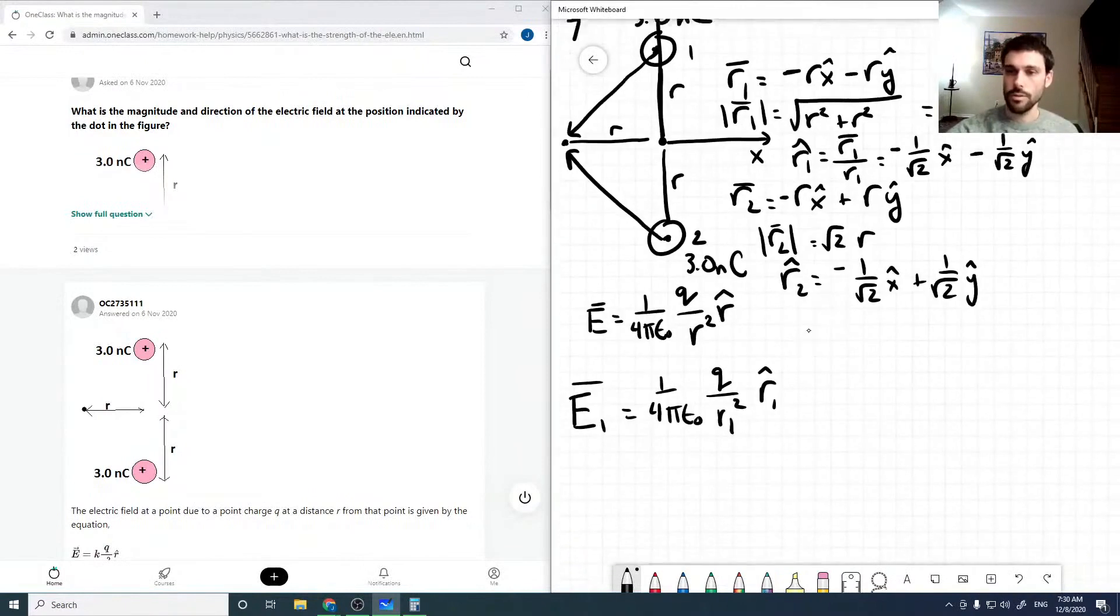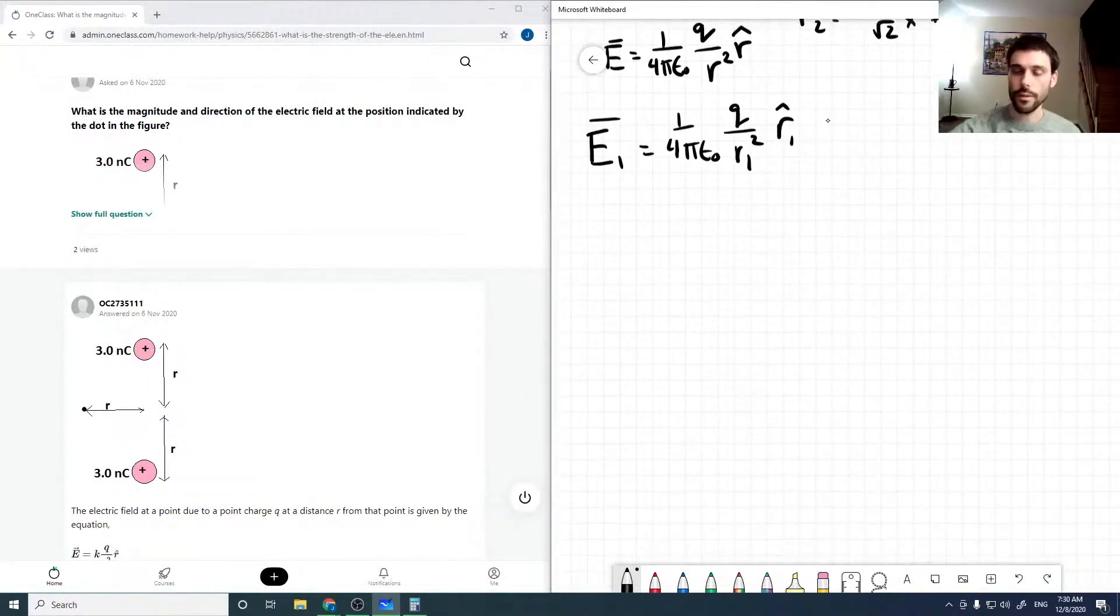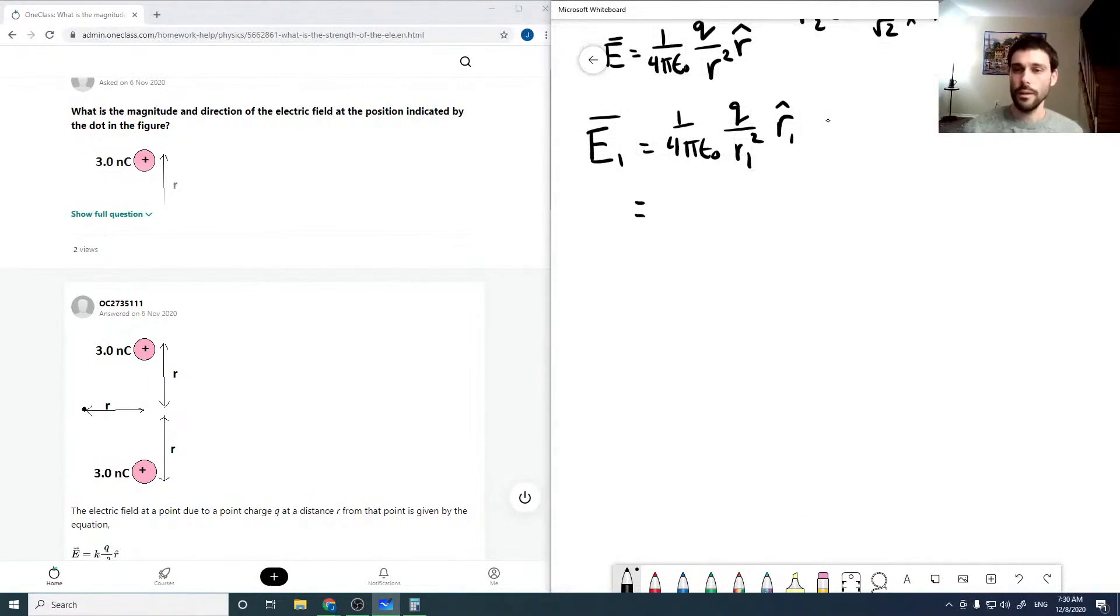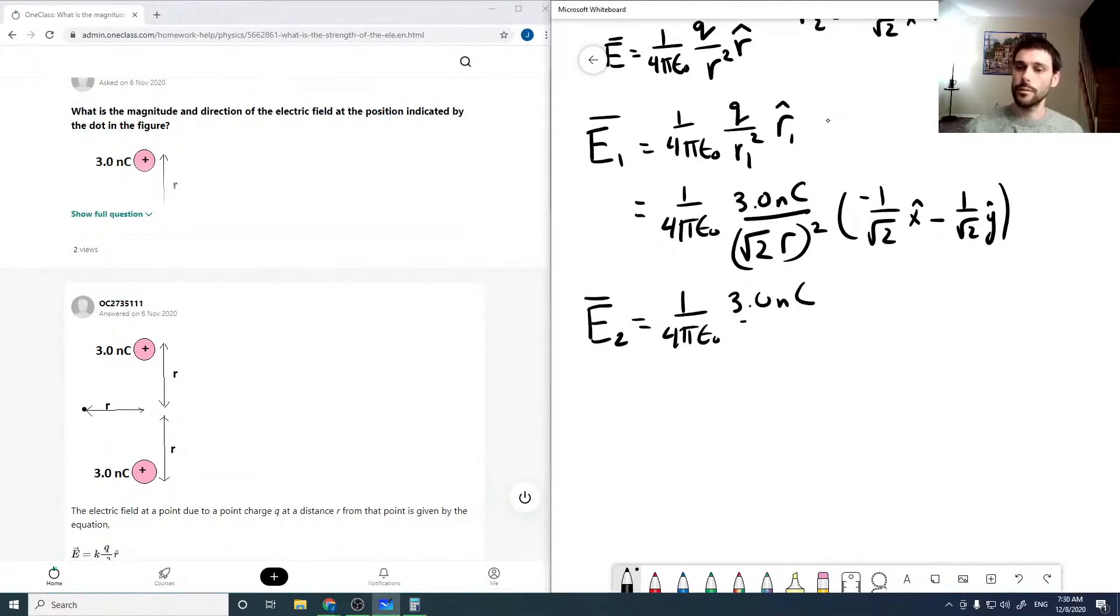So now we're in position to solve for our individual electric fields. E1 is just 1 over 4 pi epsilon naught, 3.0 nanocoulombs over root 2 r squared, times minus 1 over root 2 x hat minus 1 over root 2 y hat. And E2 is 1 over 4 pi epsilon naught, 3.0 nanocoulombs over root 2 r squared, minus 1 over root 2 x hat plus 1 over root 2 y hat.